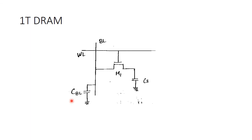Moving on to the second configuration of dynamic RAM — 1T DRAM. As the name implies, it has only one transistor. Comparing 3T DRAM and 1T DRAM: 3T has three transistors whereas 1T has only one. In 3T DRAM there are two word lines, but here only one. For bit lines, 3T has BL1 and BL2 whereas 1T has only one. Similar to 3T DRAM, there is capacitive storage denoted as CS. Additionally, there is a pre-charge capacitor CBL, which helps in the pre-charging action of the bit line.